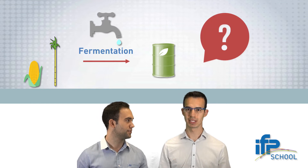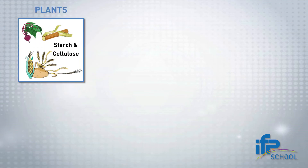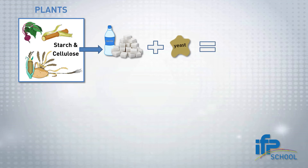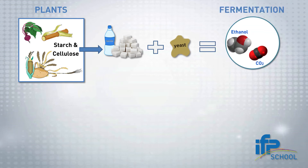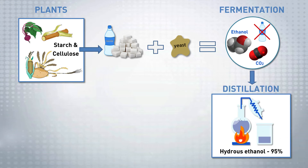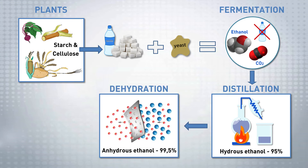Could you please give me more details about how bioethanol is produced? No problem, Albert. Plants are composed of starch and cellulose, both of which are made up of sugar. This sugar has to be mixed with water before mixing it with yeast, which ferments to form ethanol and carbon dioxide. At this point, ethanol is present in a solution with water, which needs to be removed. The separation is carried out through distillation, which gives us hydrous ethanol with a maximum yield of 95% ethanol. Afterwards, dehydration is carried out, generally using molecular sieves, to obtain the fuel grade of ethanol, which is around 99.5%. This step is very energy-intensive.